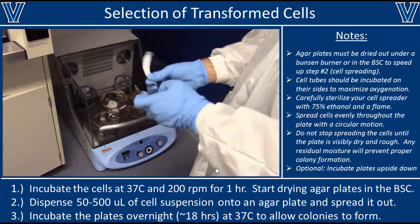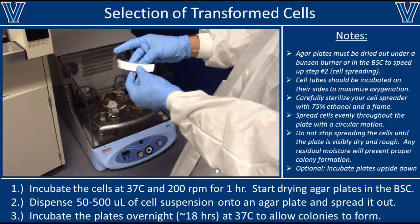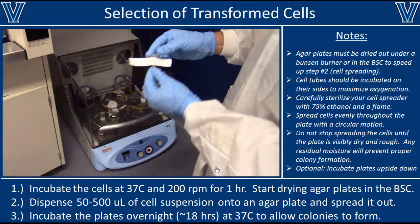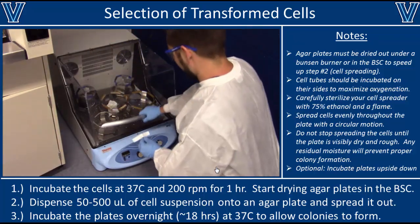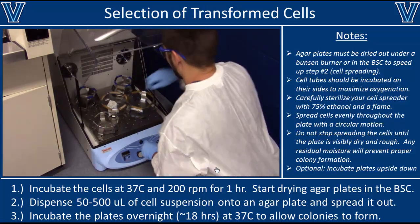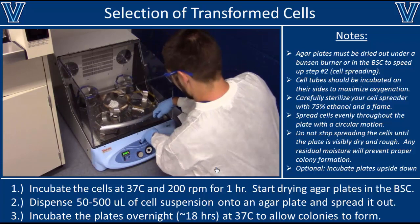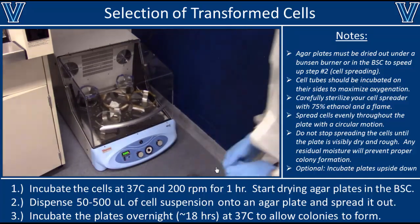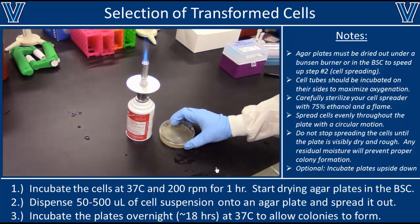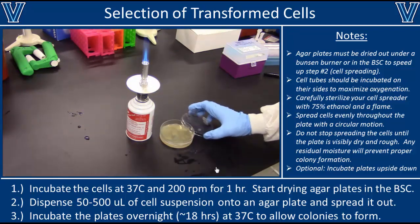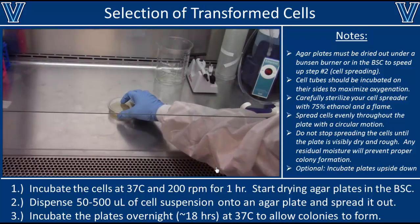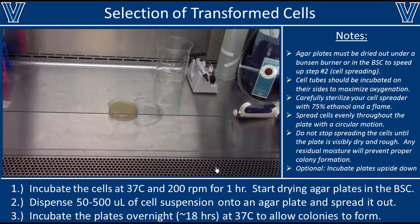Once you've added the media to your cells, incubate them at 37 degrees Celsius with 200 rpm of shaking for approximately one hour. You can keep your tube in place with a piece of tape, but make sure it's securely attached. While your cells are shaking, take your agar plates out of the fridge and let them dry out underneath a Bunsen burner or in the BSC — drying the plates will help them absorb the cells we add later.